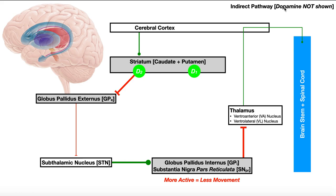The indirect pathway also inhibits certain muscles when you need other muscles to contract. For example, if you're doing a bicep curl, your elbow flexors — biceps brachii, brachioradialis, brachialis — are activated via the direct pathway. But that bicep curl won't work well if your triceps are also contracted at the same time, giving you an isometric contraction. So the triceps have to relax. The indirect pathway inhibits the antagonist to a movement, allowing it to relax so the movement is clean and efficient.